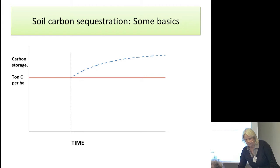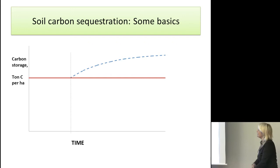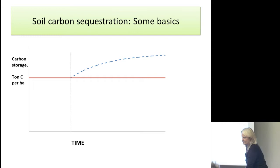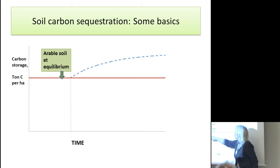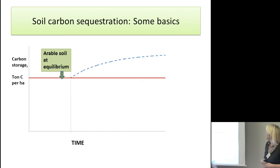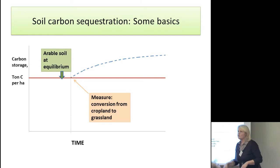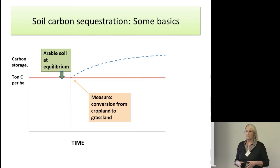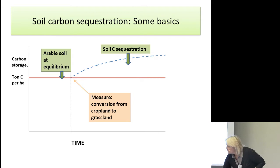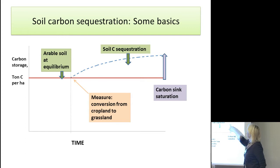Since this seems to be so important, we should cover some basics on soil carbon sequestration, because there are some concepts of big interest. Take an arable cropland soil with a carbon storage of about 50 tons of carbon per hectare, at equilibrium. Then we do something — for example, we convert this cropland into a perennial crop or a grassland. We will start to have an input of carbon into the humus fraction — stable carbon. This is what we call soil carbon sequestration. After a number of years, we will reach a new equilibrium, so we will have a saturation.